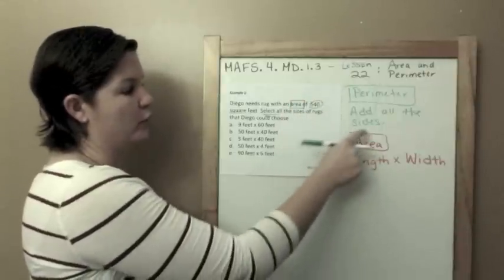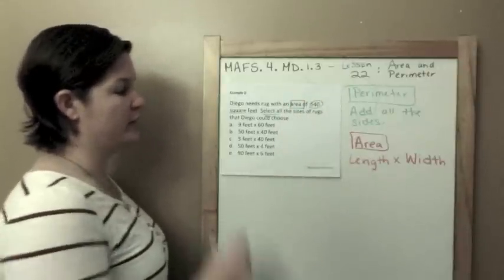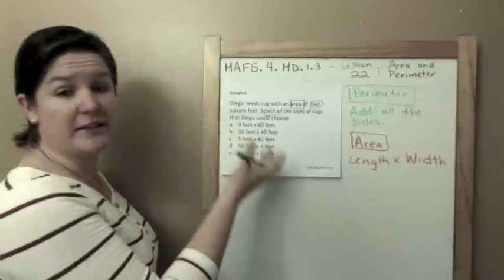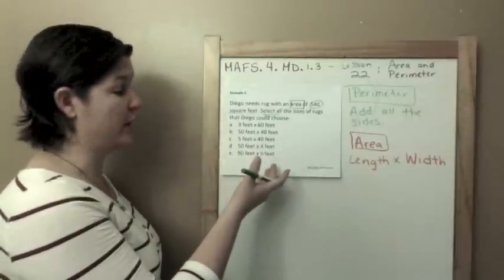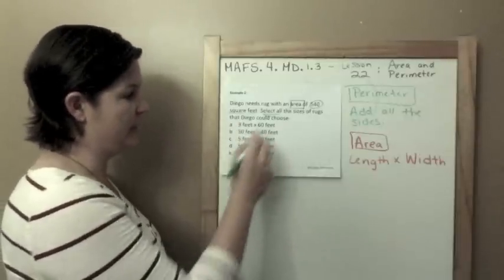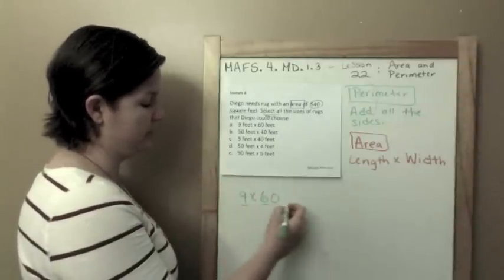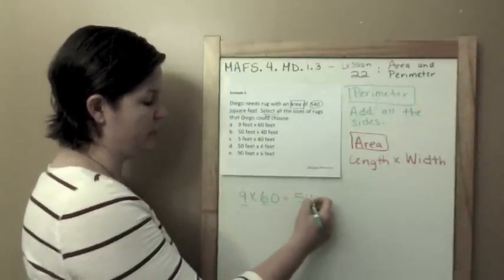So what I need to do, since we're finding the area, I should have boxed that, we're multiplying the length times the width. So I need to multiply all these lengths times the widths to see if I get 540. All right, so first 9 times 60.